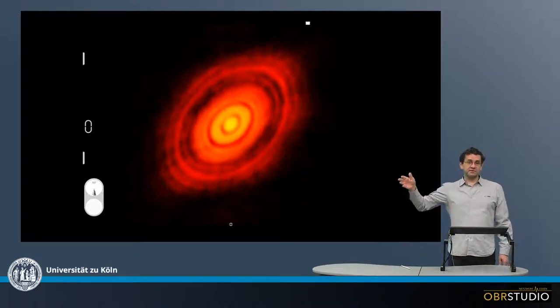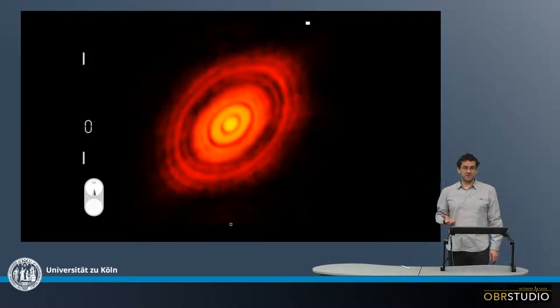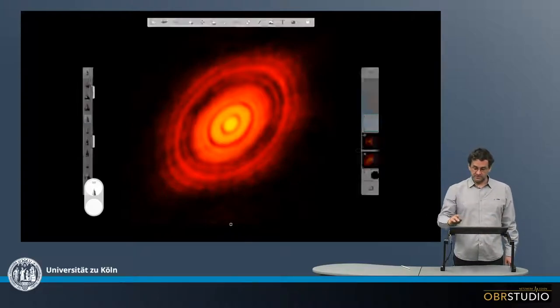This is HL Tauri. It is a protoplanetary disk around a Sun-like star, and it is about 450 light-years away from our solar system.